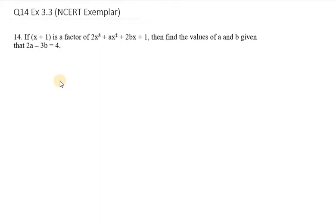Hello everyone, let's start with question number 14 exercise 3.3. If x + 1 is a factor of 2x³ + ax² + 2bx + 1, then find the value of a and b given that 2a - 3b = 4.